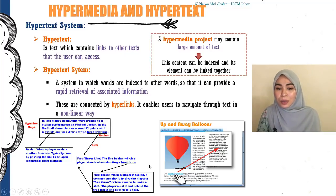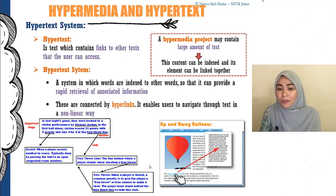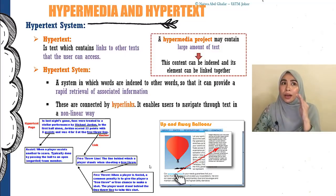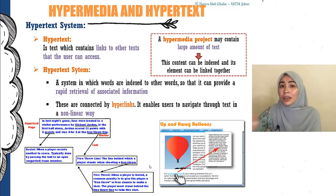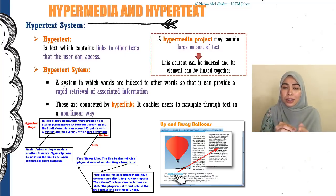A hypertext system is a system in which words are indexed to other words so that it can provide rapid retrieval of associated information. These are connected by hyperlinks, enabling users to navigate through text in a nonlinear way. Because websites allow you to get from one page to another very easily using hyperlinks, you can access information faster instead of scrolling through everything.